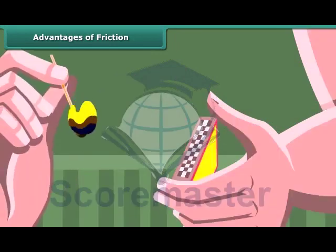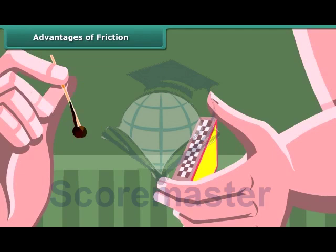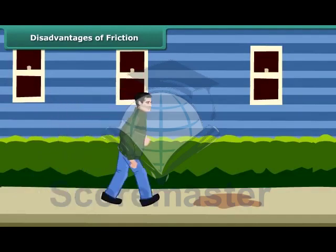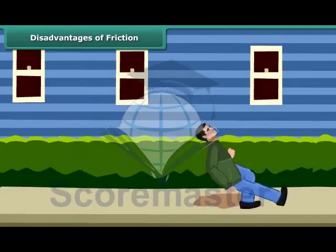When we rub a matchstick against the rough side of the matchbox, the friction between the head of the matchstick and the side of the matchbox produces heat, which lights the matchstick. On the other hand, when we step on a greasy or oily surface, a foot slips because friction is reduced due to the smoothness of the grease or oil.